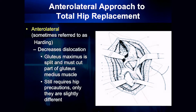The anterolateral approach is very similar. The incision moves to the side of the hip, and when this is done, you also have to have cutting of the muscles. So very similar to the posterior approach, you may require some of the precautions that are involved with the cutting of the muscle.